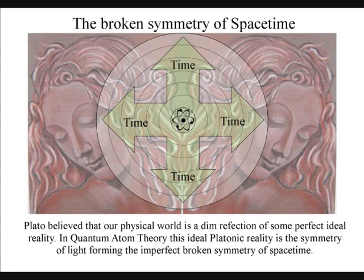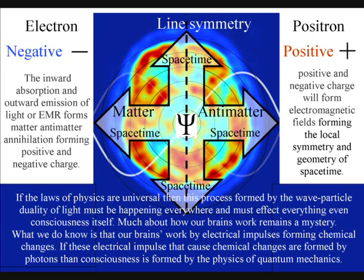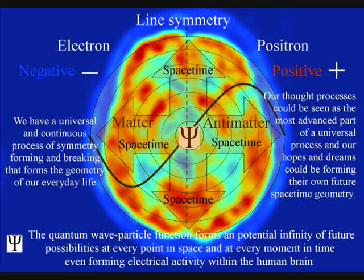Despite rapid progress, much about how the brain works remains a mystery, but what we do know is that our brains work by electrical impulses forming chemical changes. This electrical activity also forms electromagnetic fields.